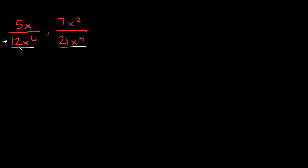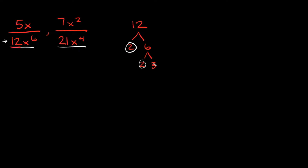Let's start with 12. What are two numbers I can multiply together to get 12? Well, I can break that down into 2 times 6. Remember, you just circle your prime numbers, so 2 is prime so we'll circle it. 6 we can keep breaking down into 2 times 3. Both 2 and 3 are prime so we'll circle both of those.